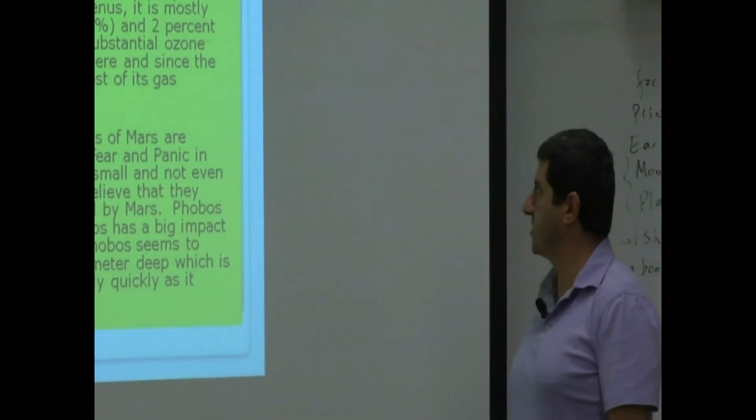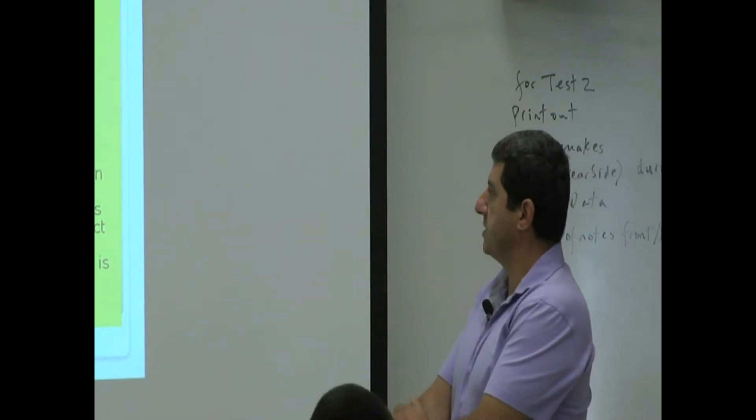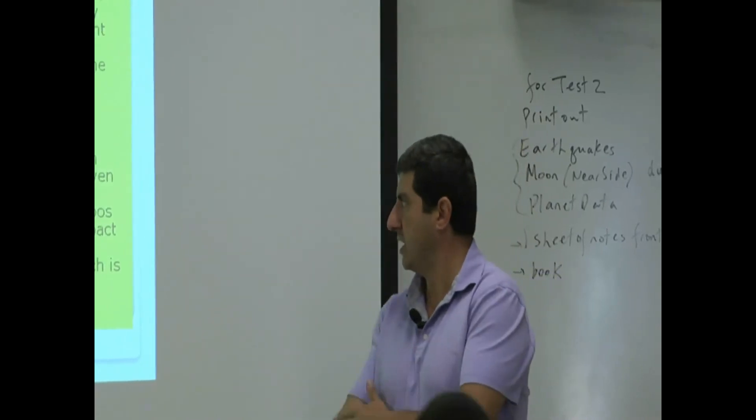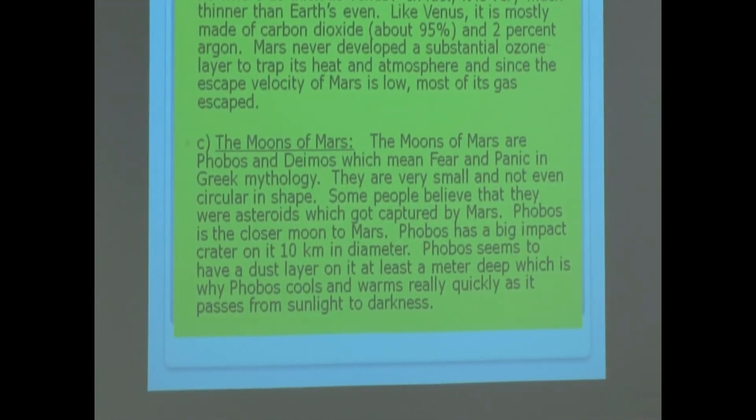The moons of Mars. The moons of Mars are Phobos and Deimos, which mean fear and panic in Greek mythology. They are very small and not even circular in shape. Some people believe that they were asteroids which got captured by Mars. This is pretty much the going theory now, that they're not the original moons of Mars. Phobos is the closer moon to Mars, out of the two.